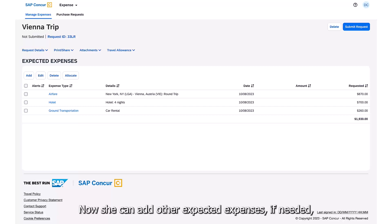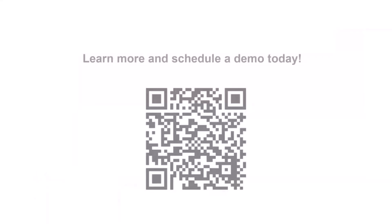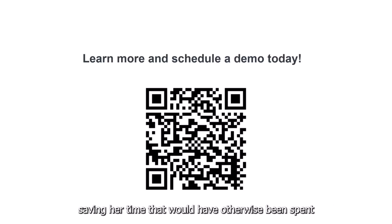Now she can add other expected expenses if needed, or submit the request for approval. Request Assistant made the trip planning process a breeze for Sarah, saving her time that would have otherwise been spent researching the costs of each aspect of her trip.